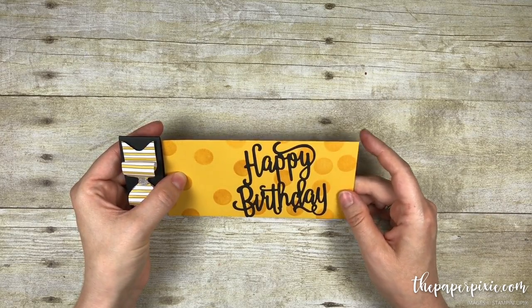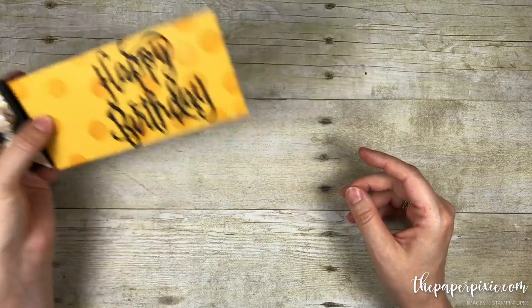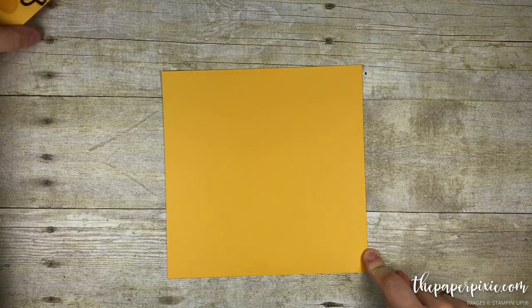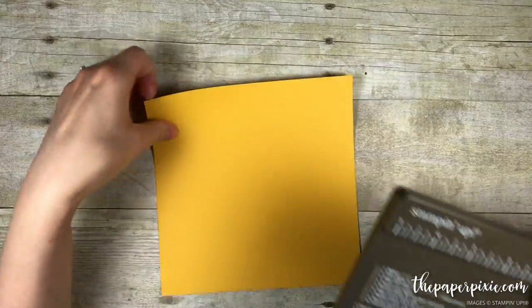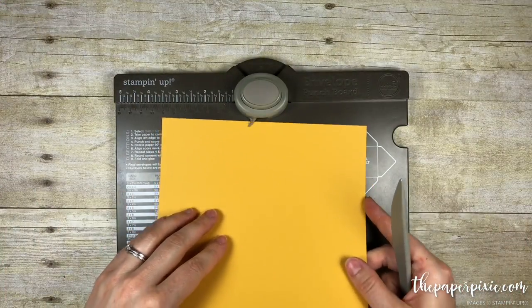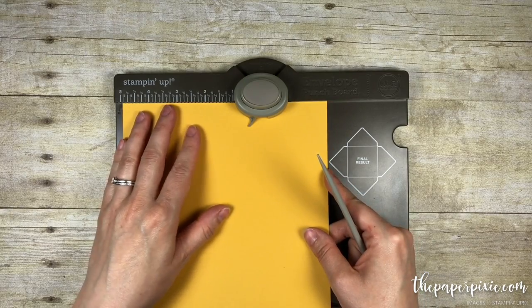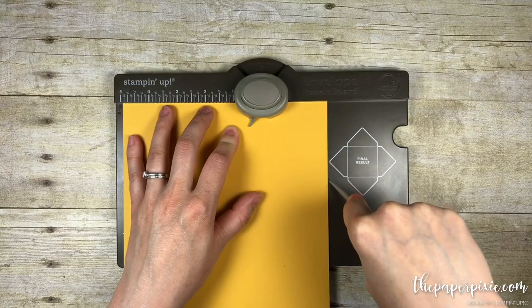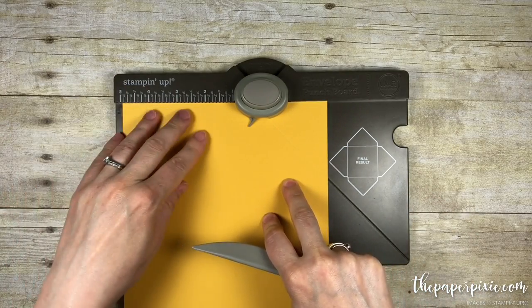Given those measurements, the envelope generator app told me to use a piece of card stock that measures seven and three eighths by seven and three eighths. Using the envelope punch board, we are going to make our first score line at the five inch mark. So we are going to punch and score, lining this left edge at the five inch mark.